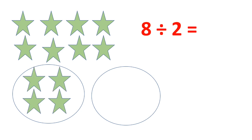1, 2, 3, 4. 1, 2, 3, 4. It means 8 divided by 2 is equal to 4. Okay, let's see.